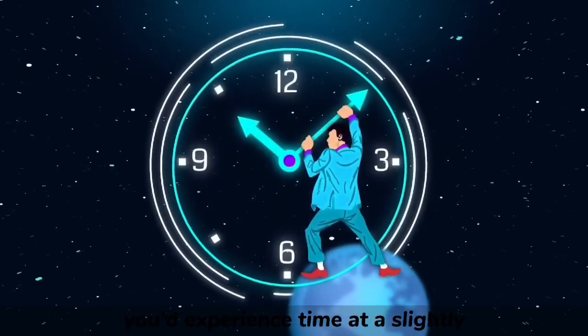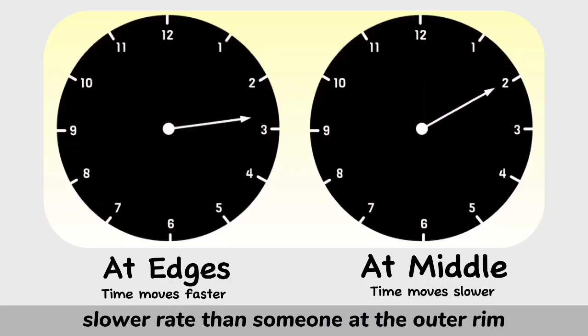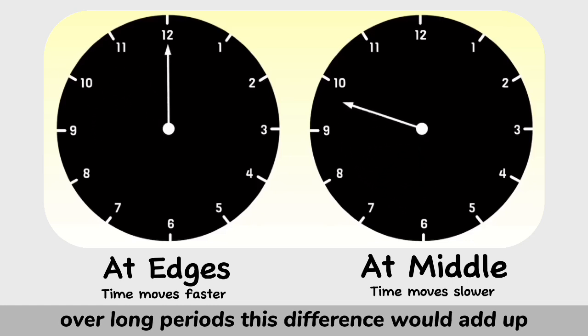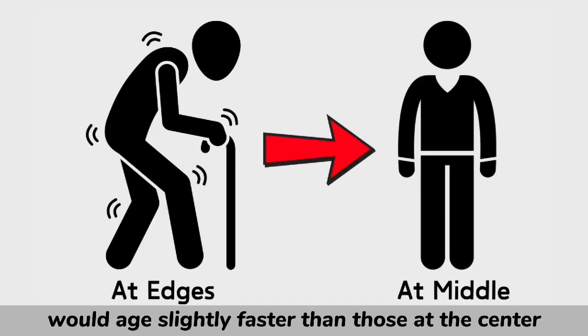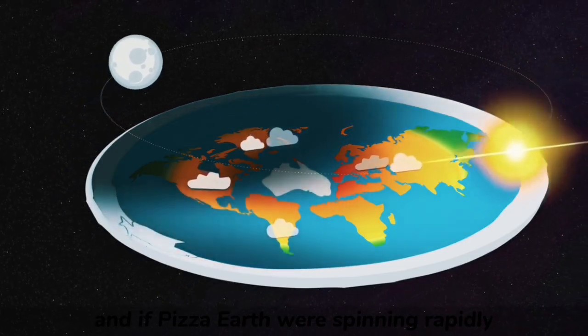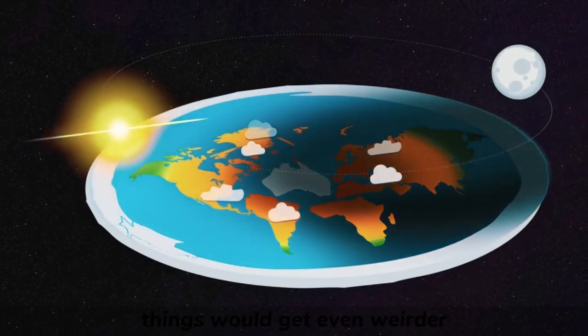If you lived in the middle, you'd experience time at a slightly slower rate than someone at the outer rim. Over long periods, this difference would add up. People near the edges would age slightly faster than those at the center. And if pizza Earth were spinning rapidly, things would get even weirder.